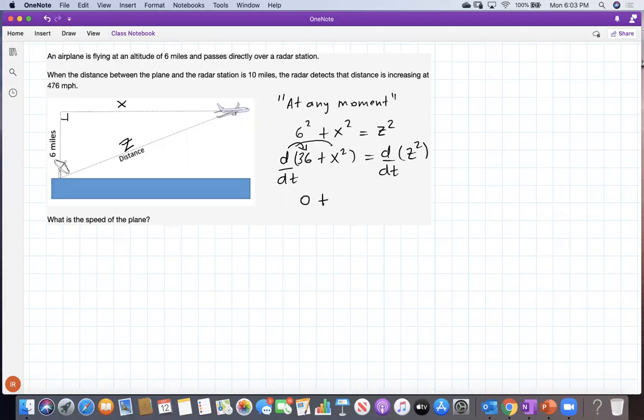Derivative of x squared is 2x, but since we're taking derivative with respect to time, we have to attach dx/dt. This is because of the chain rule. Next, derivative of z squared. That is 2z, but that's when you take the derivative with respect to z. We are taking derivative with respect to t, so we're going to attach dz/dt.